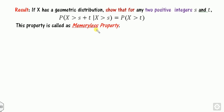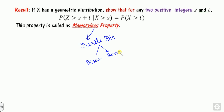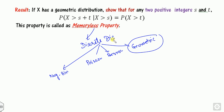Now, what is the memoryless property? This property is very important in discrete distributions. Discrete distributions include the Poisson distribution, the Bernoulli distribution, the geometric distribution, the negative binomial distribution, and so on. Only the geometric distribution follows this memoryless property, while others do not — that is why the importance of this property is so significant.